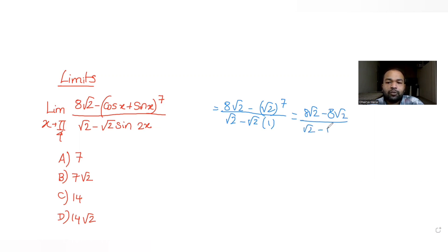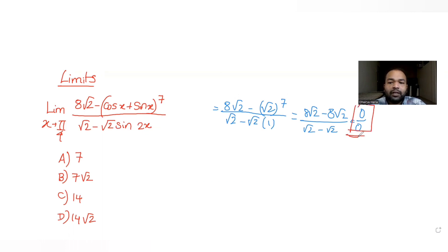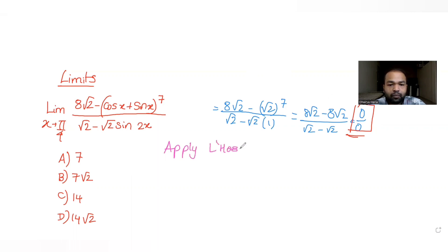So substituting x = π/4 gives us 0/0, which is an indeterminate form — not defined. Since we get this 0/0 form, we can apply L'Hôpital's rule to solve this limit.